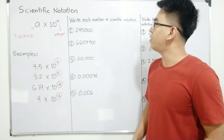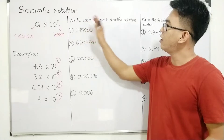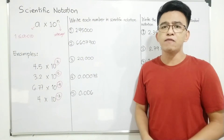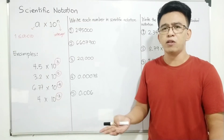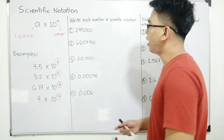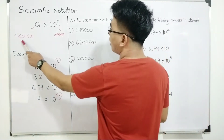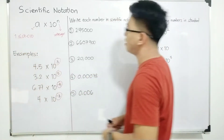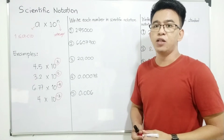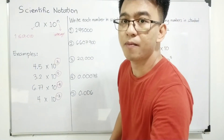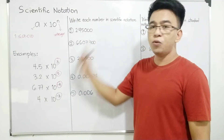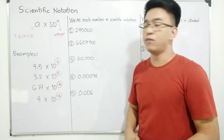So let's have item number 1, in which we are asked to write each number in scientific notation. How do we convert a very large number or small number into scientific notation? Since your 'a' must be greater than or equal to 1 but less than 10, you need to know your target decimal point. We have the given number 245,000.